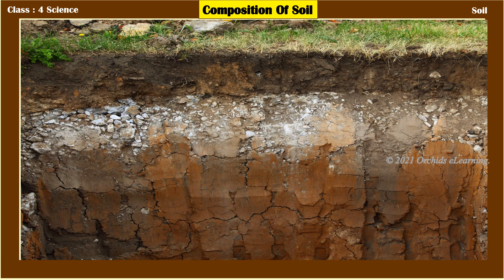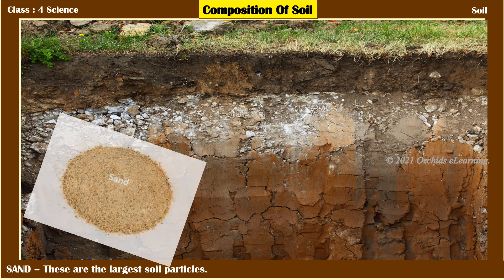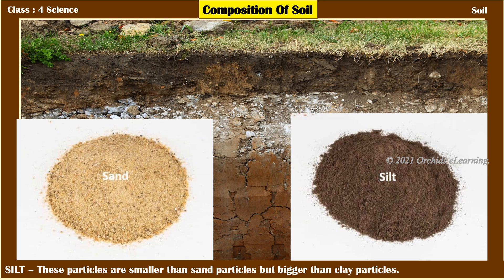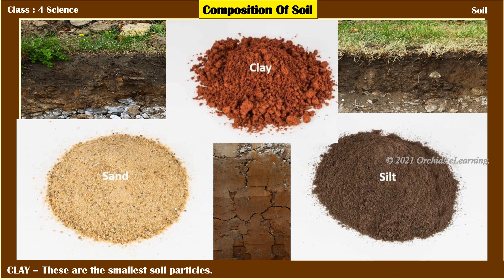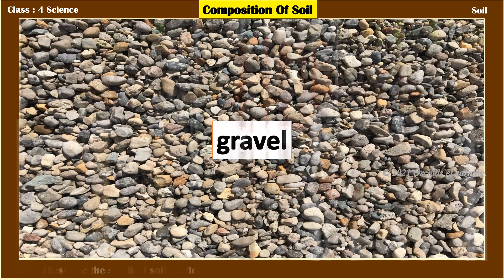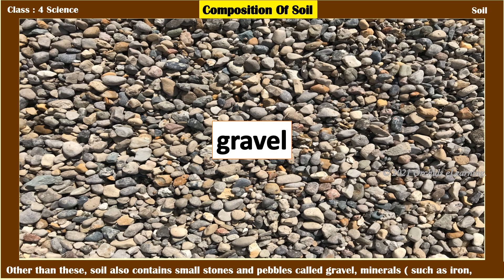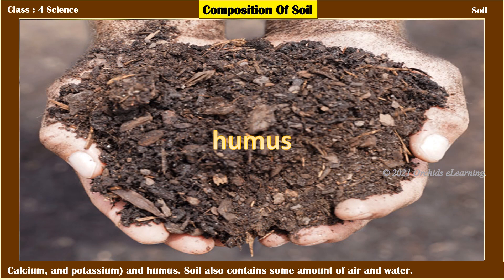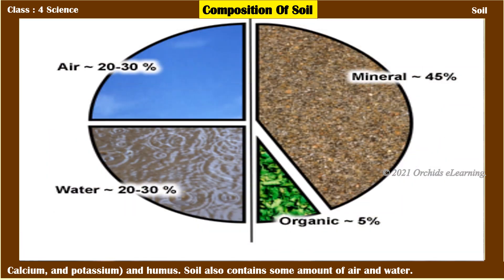Composition of soil: Soil is made up of different types of soil particles. Sand particles are the largest. Silt particles are smaller than sand particles but bigger than clay particles. Clay particles are the smallest. Soil also contains small stones and pebbles, also called gravel, as well as minerals such as iron, calcium, potassium, and humus. Soil also contains some amount of air and water.